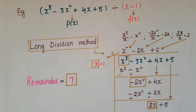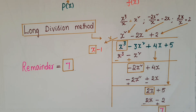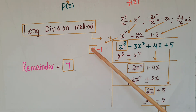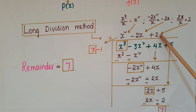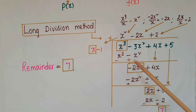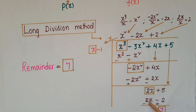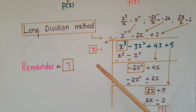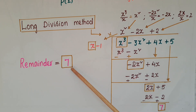The next term is +5, so write it here. Again the first term is 2x, so 2x divided by x is 2. Write +2 at the quotient place. Then 2 × x = 2x and 2 × (-1) = -2. Subtract: 2x - 2x cancels and +5 + 2 gives 7. So the remainder here is 7.